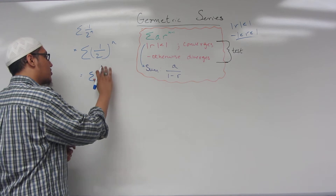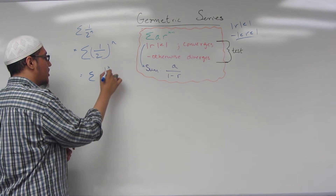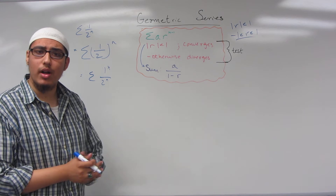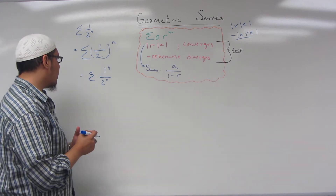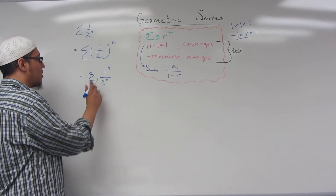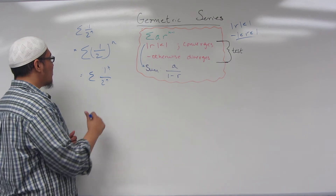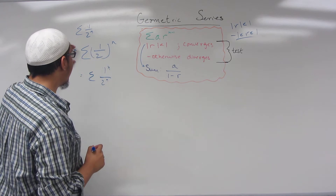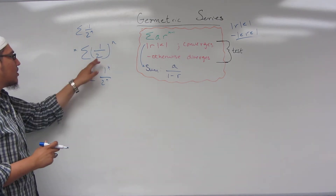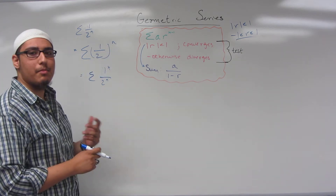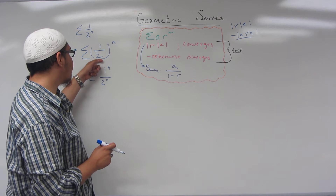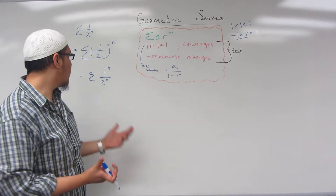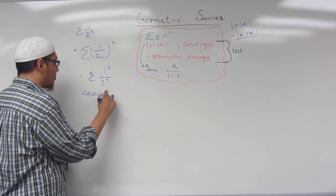We end up getting 1 to the n over 2 to the n. Since 1 to any finite power is always 1, this simplifies back to (1/2) to the n. Now what is our R term? We can see R raised to some n power. Is 1 half between negative 1 and 1? Yes, it is. Therefore this is convergent by the geometric series test.